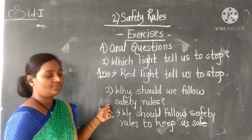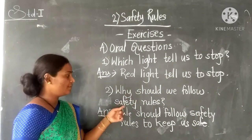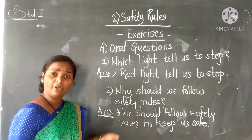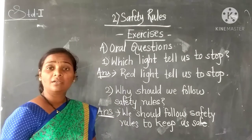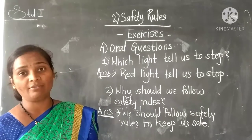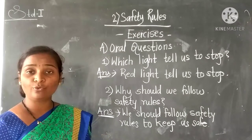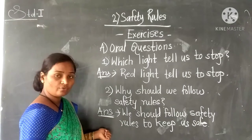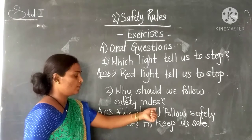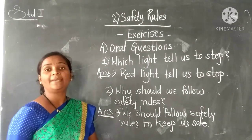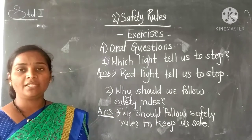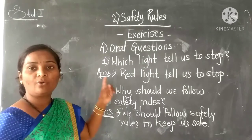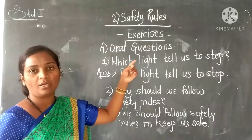The second question is: why should we follow safety rules? We have learnt that we have to be safe. So what you have to write here is: we should follow safety rules to keep us safe. In this way, you have to write the oral questions section.